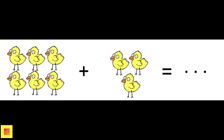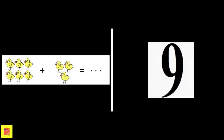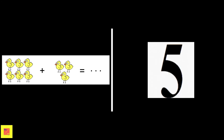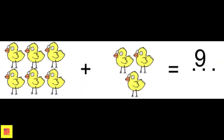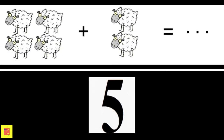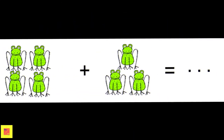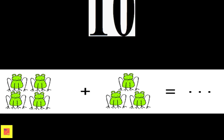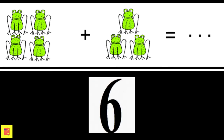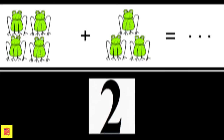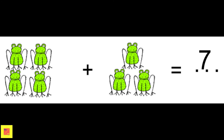Now let's all do some practice. Add the total number of chickens on the screen. The sum of chickens on the screen is nine. Find the sum of sheep on the screen. The total number of sheep are six. How many frogs are there altogether? Altogether, there are seven frogs.